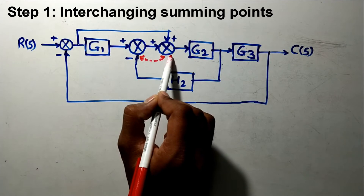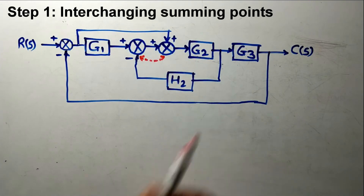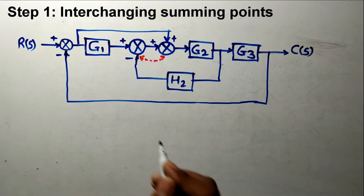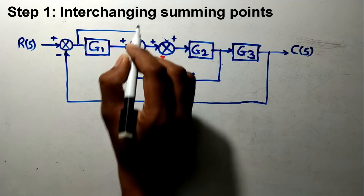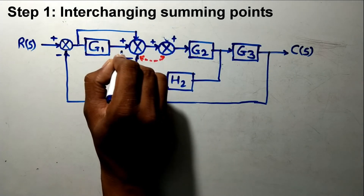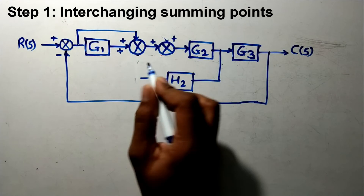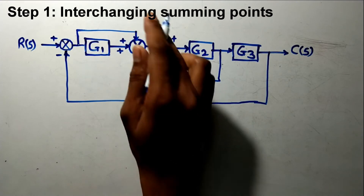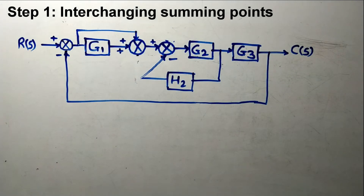If this line is connected to this summing point with a positive sign, it will remain as it is, and if this is connected to h2, it will remain as it is. In step number one, after interchanging: this will come here connected with positive sign for both, and h2 will now be connected to this one with a negative feedback. The sign is not changed — the only thing done is the interchanging of summing points. After step one you will get this diagram, and now you can find the solution.